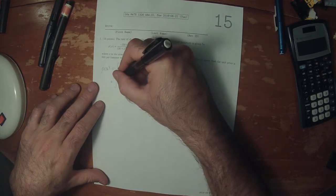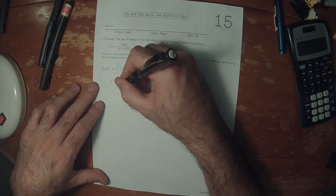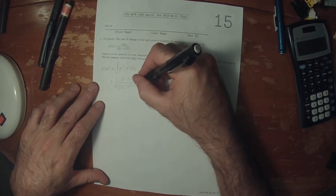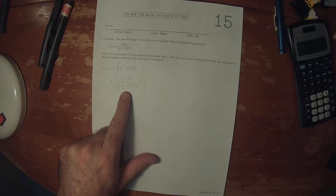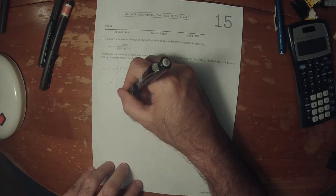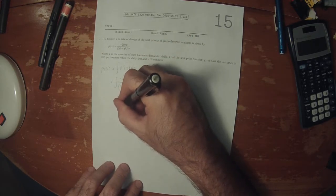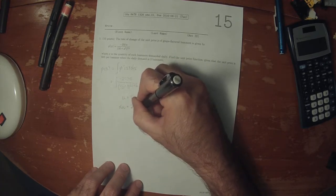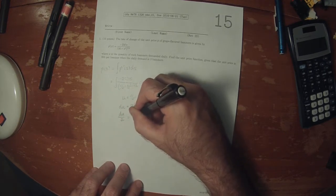So the anti-derivative of negative 250x in the numerator divided by 16 plus x squared to three halves in its denominator. To proceed we'll need to substitute u is 16 plus x squared. So then du is 2x dx, so du over 2 is x dx.